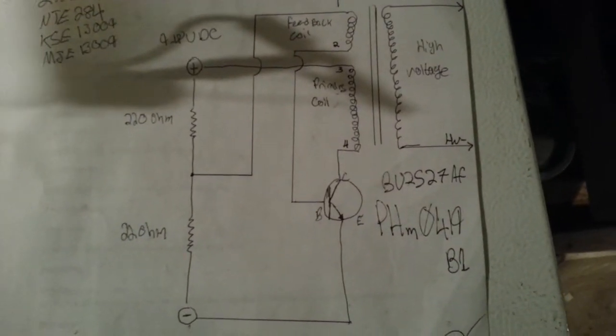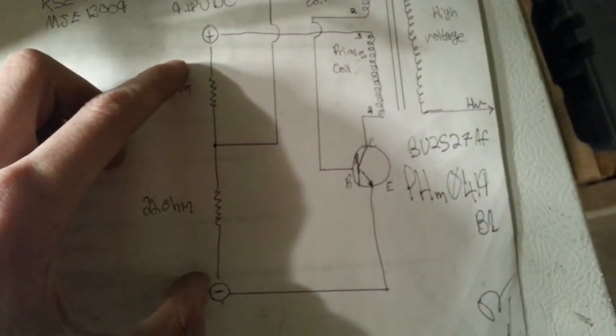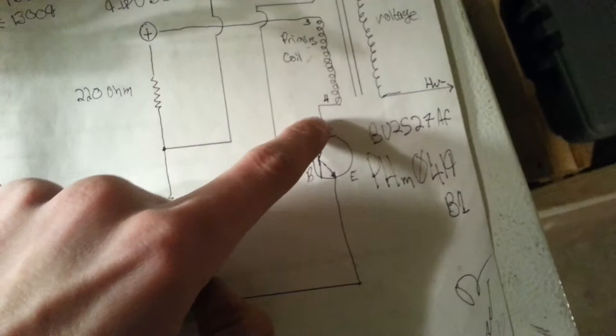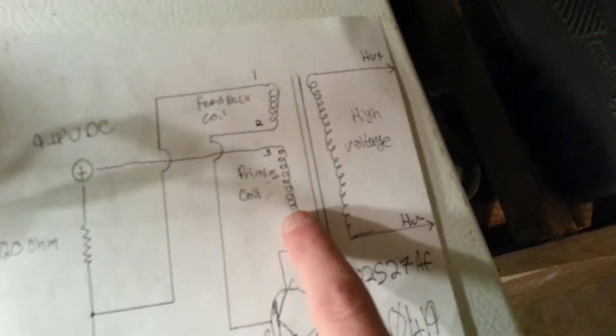So you have your power supply positive in. I'm just pointing out. Positive power supply, negative power supply. And you got your transistor, CBE. You got your primary coil and your feedback coil. And your high voltage out, ferrite core.